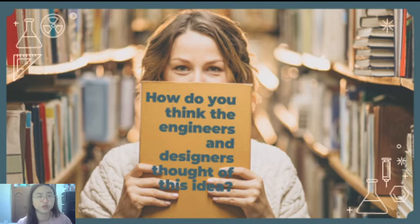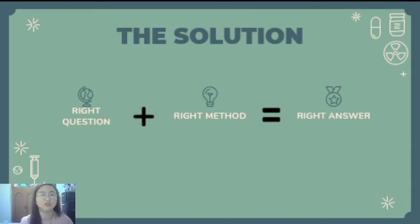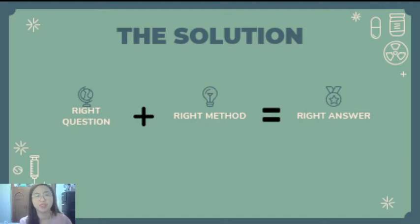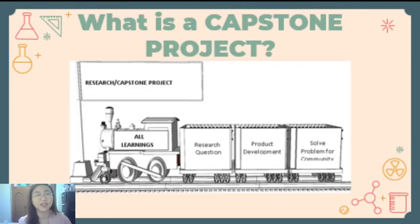But here's the question — how do you think the engineers and designers thought of this idea? How did they come up with this idea? So the solution: we believe that they have the right question plus the right method, and then they come up with the right answer. So the solution there is they did their research. They have the problem, they got the method correctly, and they got the correct and perfect answer just to build the Burj Khalifa.